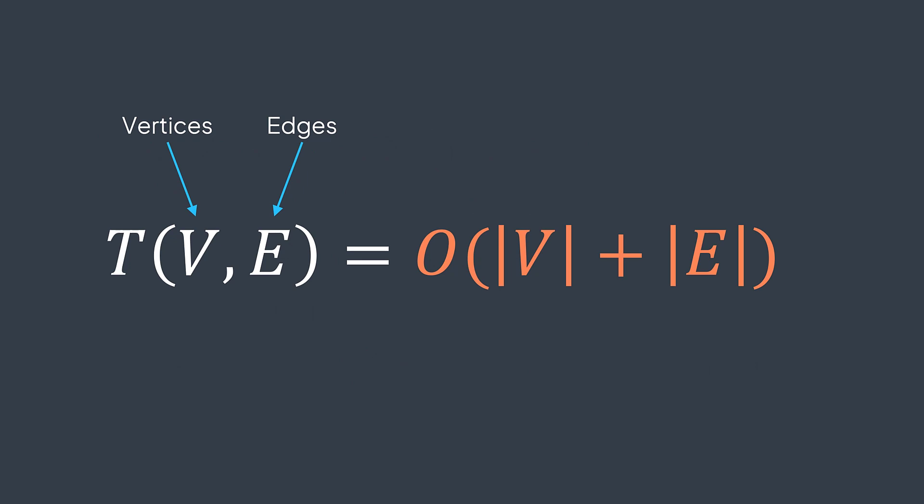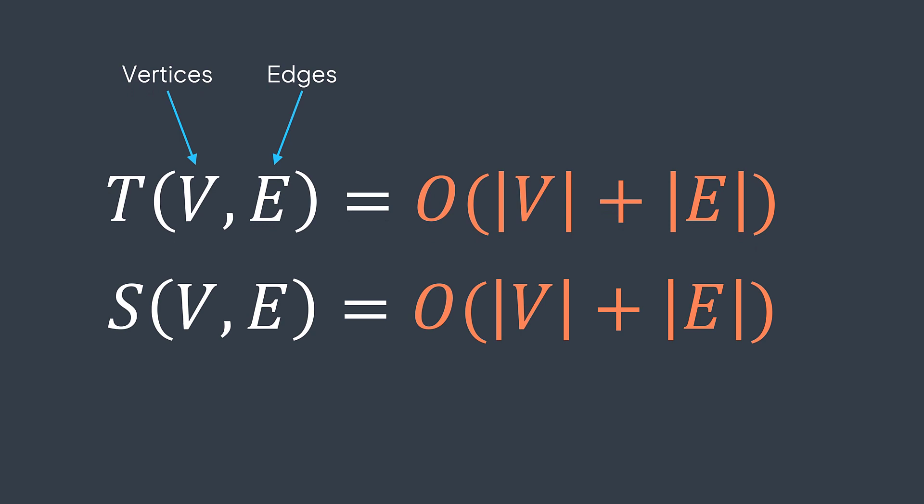For the space complexity, we also get O(|V| + |E|), because we're cloning the graph. We're cloning all the |V| vertices and all the |E| edges.